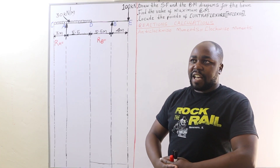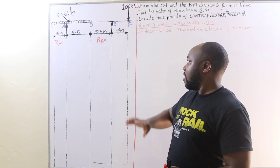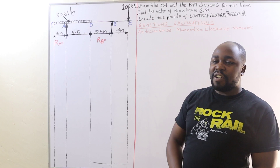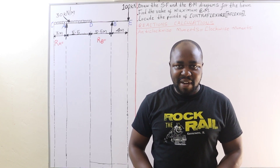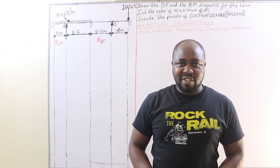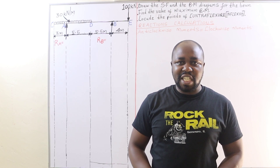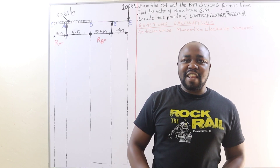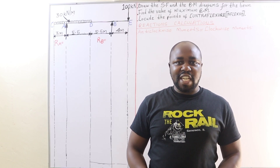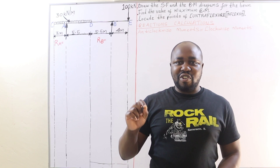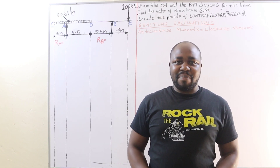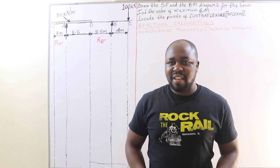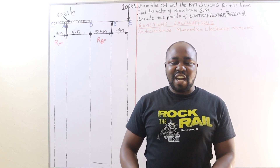We are asked the following questions about this beam. The first question is to plot the shear force and bending moment diagrams. The second question is to locate the position of maximum bending moment. The third question is to locate the points of contraflexion or points of inflection. We are going to begin with reaction calculations.